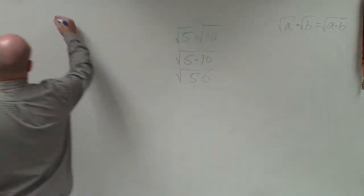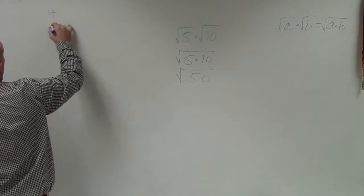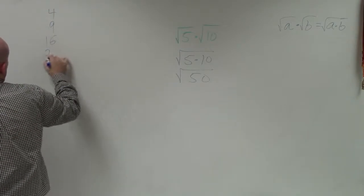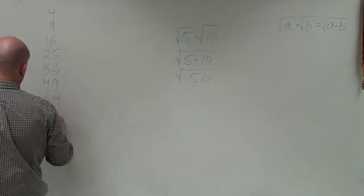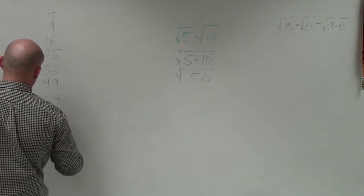So let's look at our square numbers, which would be 4, 9, 16, 25, 36, 49, 64, 81, and 100.